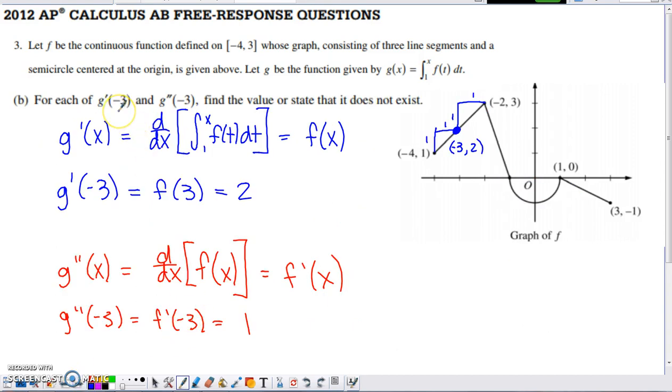Part B, we want to find g prime of negative 3 and g double prime of negative 3, or state that the value does not exist. Before we can find g prime of negative 3, we need to find g prime of X. When I take g of X and attempt to take the derivative of it, this is a direct application of the fundamental theorem of calculus. Whenever we're taking the derivative of a function that's defined this way, we're going to copy the integrand and replace the dummy variable with that upper limit of integration. So g prime of X is simply equivalent to f of X.